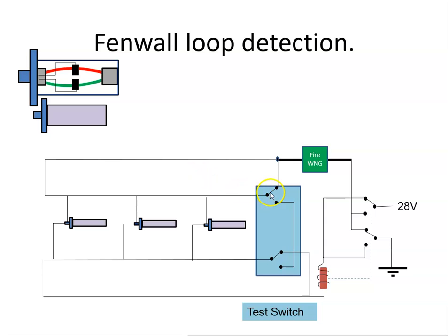To test the system, we have a test switch. When the switch is closed, we have a short circuit across the detectors. Current can come from the 28 volt supply.